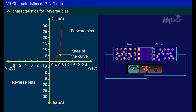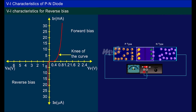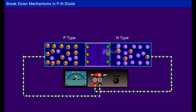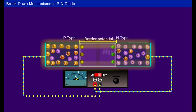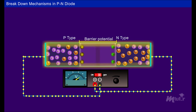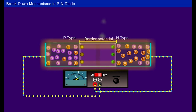For reverse bias VI characteristics: as reverse voltage increases, minority charge carriers start to move. At constant temperature, the reverse current is almost constant, hence it is called reverse saturation current. If the reverse voltage is increased beyond a particular value, a large reverse current will flow and damage the diode. Reverse saturation current also depends upon temperature. To avoid this damage, the diode breakdown should be controlled.